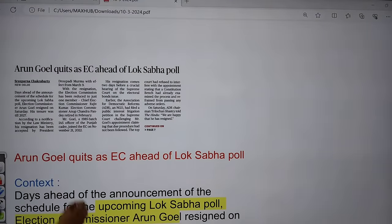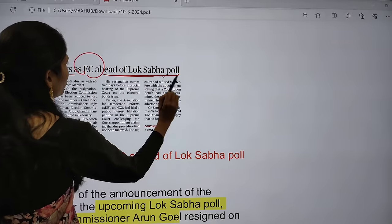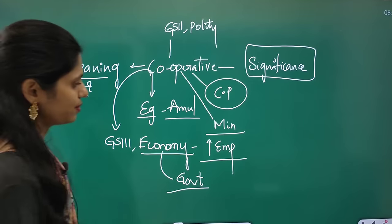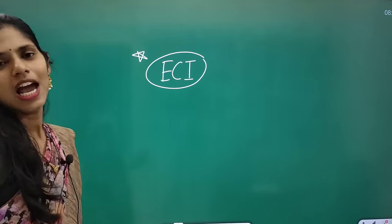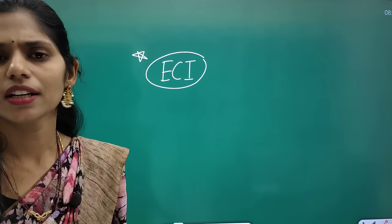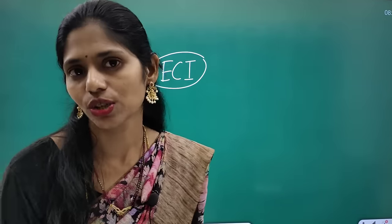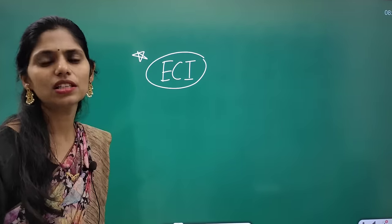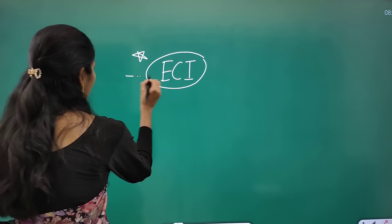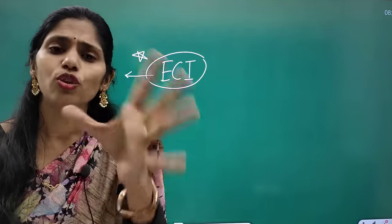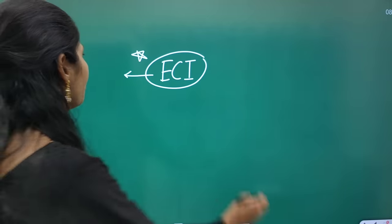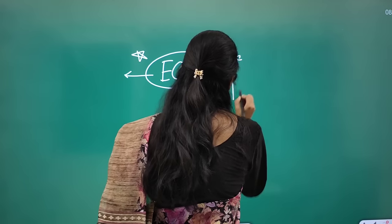There is one important article: Arun Goyal quits Election Commission ahead of Lok Sabha poll. There are some important dimensions to see here. Whenever you see any topic from the Election Commission of India, it is very important. Free and fair elections is the basic structure of our constitution — the Supreme Court has said so. Any article relating to the Election Commission of India will be very important from both prelims and mains.